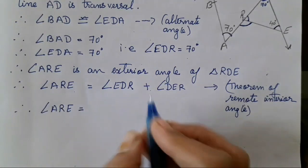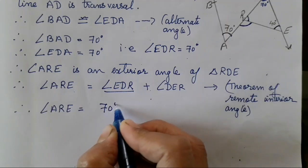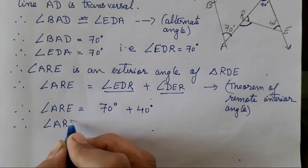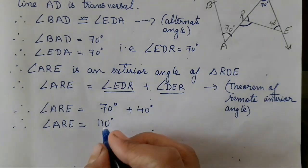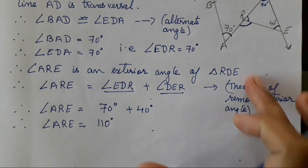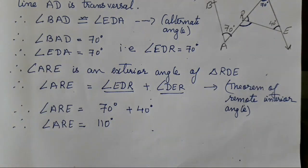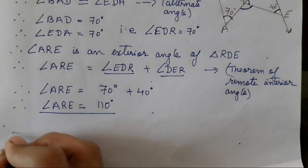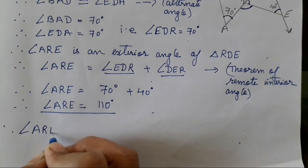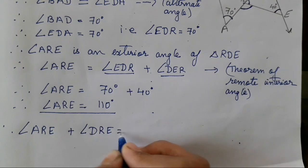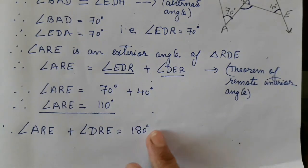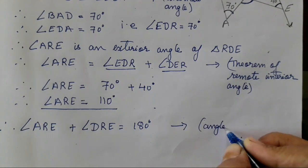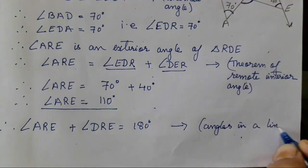Angle EDR is 70° and angle DER is 40°, so angle ARE equals 110°. We write everything for marks since every point carries half a mark. Now, angle ARE plus angle DRE equals 180° by the angles in a linear pair property.